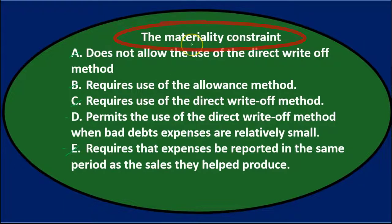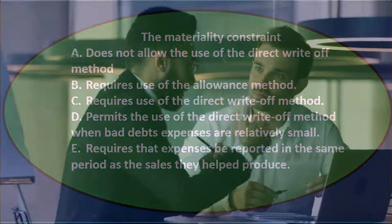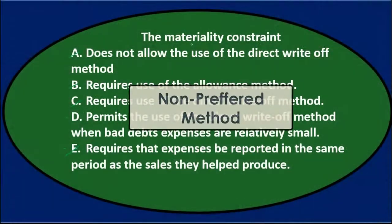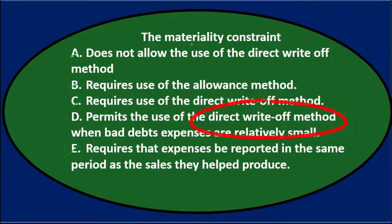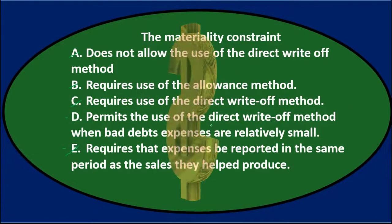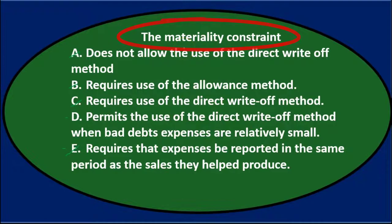So D is the answer. The materiality constraint means that if something is small enough that it doesn't affect decision-making processes, we can use the non-preferred method — the direct write-off method. The direct write-off method doesn't apply the matching principle as well, but it's typically easier. If the difference is immaterial because of the dollar amount, then it would be permitted under the materiality constraint. The answer is D: the materiality constraint permits the use of the direct write-off method when bad debt expenses are relatively small.